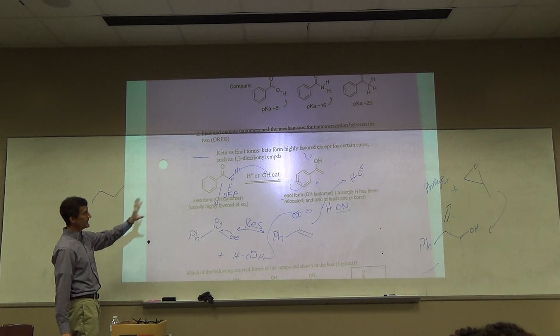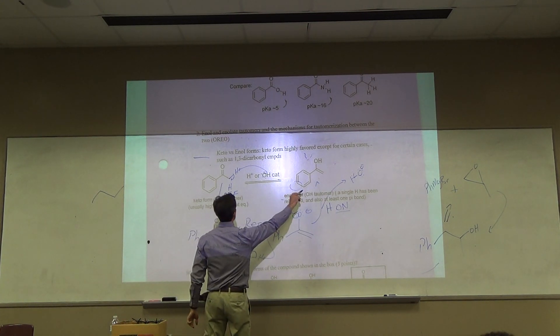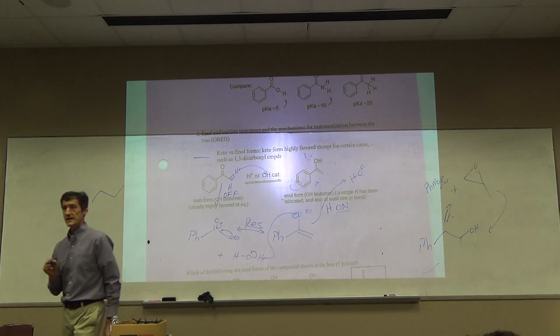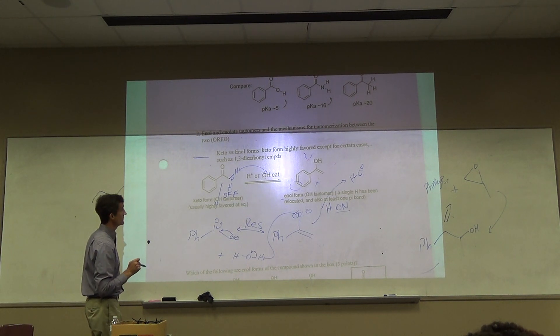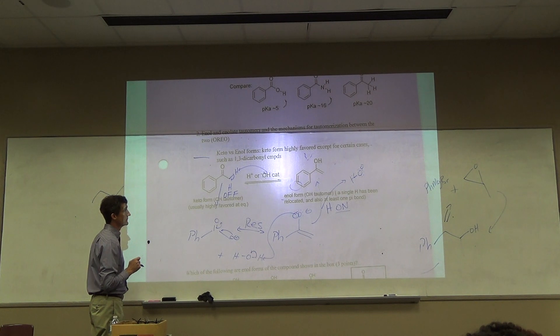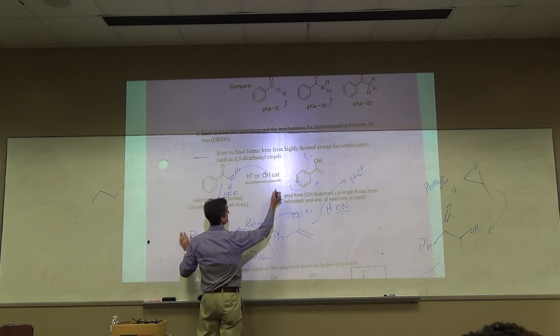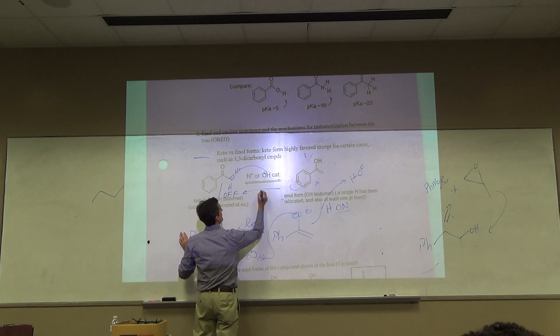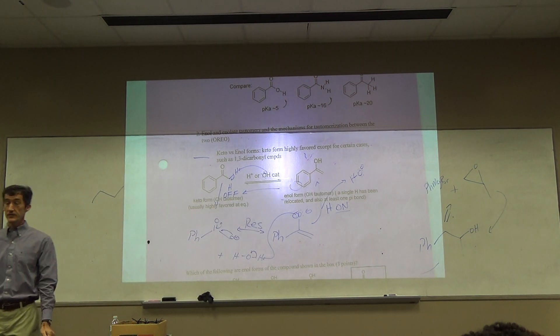Now, any aldehyde or ketone exists in equilibrium with enol. But typically, the carbonyl form is highly favored. Highly favored. So, the equilibrium is typically like this. See the other arrow going the other way?